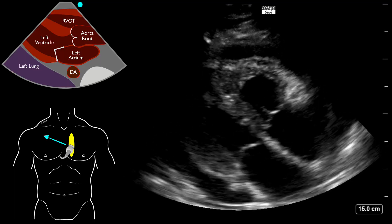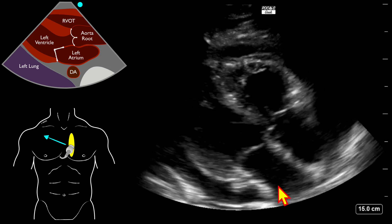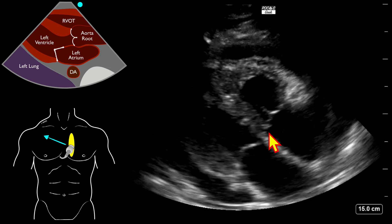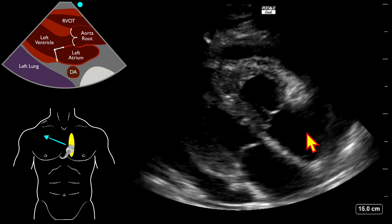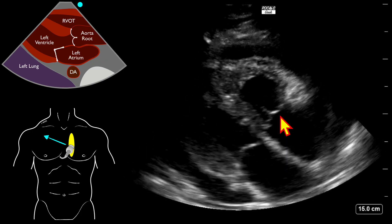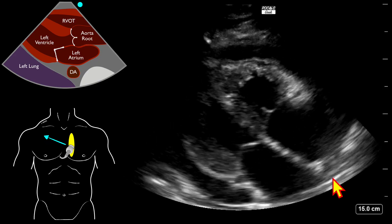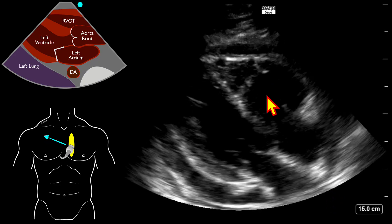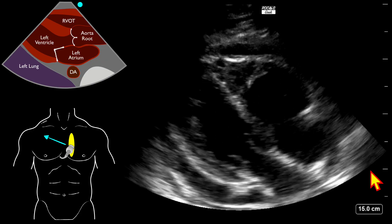This is supposed to be a parasternal long axis. It is off-plane, and sometimes when we have pathology, it alters things just a little bit. We know this because we don't see the aortic root or the left ventricular outflow tract, and we are seeing what looks like the right atria and the tricuspid valve. This could be corrected by fanning superior, which would bring in more of the left ventricle and get rid of the right ventricle side of the view.